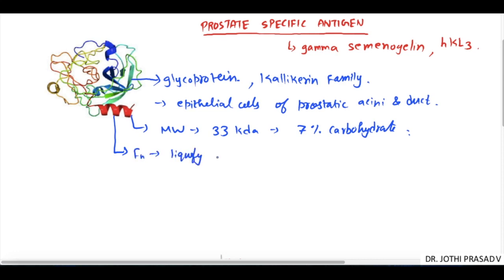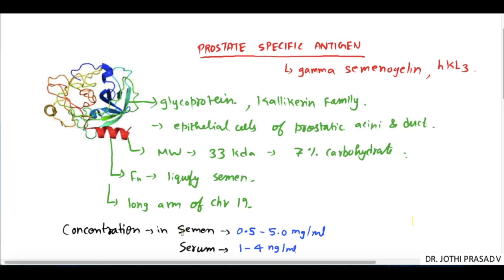The chief function of prostate specific antigen is to liquefy the semen. The gene for PSA is located on the long arm of chromosome 19.